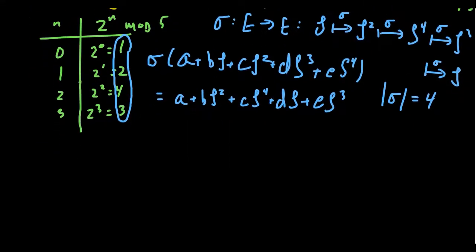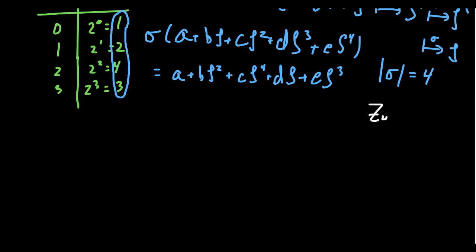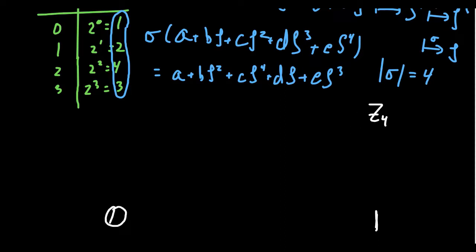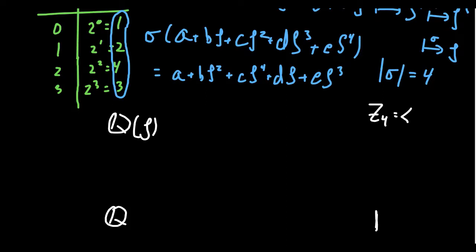Drawing the Galois group lattice: Z4 is on top, the trivial group is on the bottom. The field fixed by every automorphism is the rational numbers at the very bottom. The field fixed by only the identity is the whole field Q(zeta) at the top. Since the Galois group is generated by sigma—the squaring map—and it's cyclic of order 4, there should be an intermediate field corresponding to Z2, with both extensions being degree 2. The subgroup of order 2 must be generated by sigma squared.